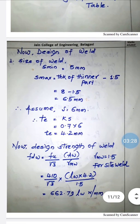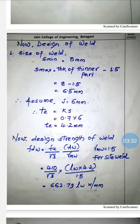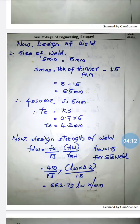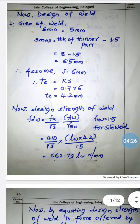Now moving on to the design of weld, we first find the required size of weld. There are two categories: s_minimum and s_maximum, from IS 800 Table 21, page 78. S_maximum = thickness of thinner part minus 1.5. The two elements are a 12 mm plate and an 8 mm angle, so the thinner part is 8 mm. Thus s_max = 8 − 1.5 = 6.5 mm. We assume size of weld s = 6 mm, giving effective throat thickness te = k × s = 0.7 × 6 = 4.2 mm.